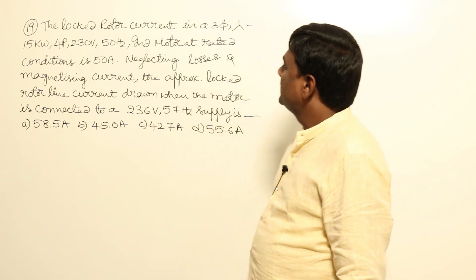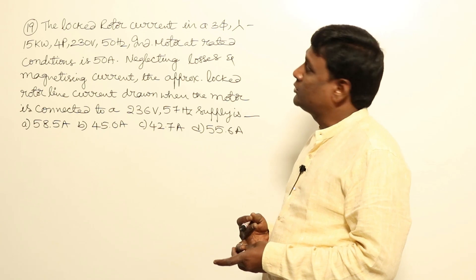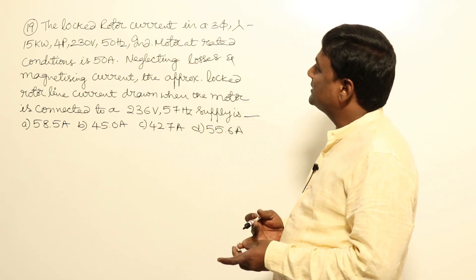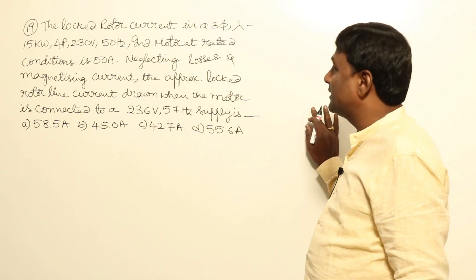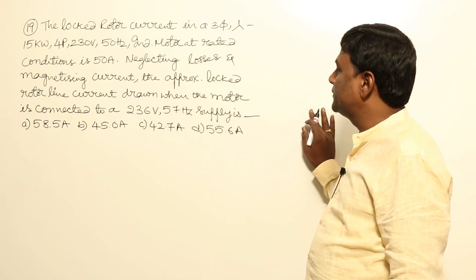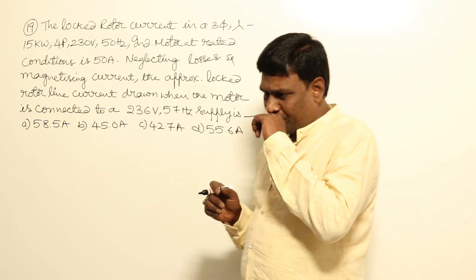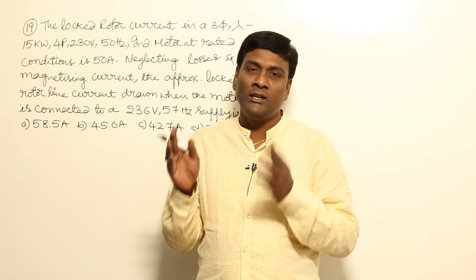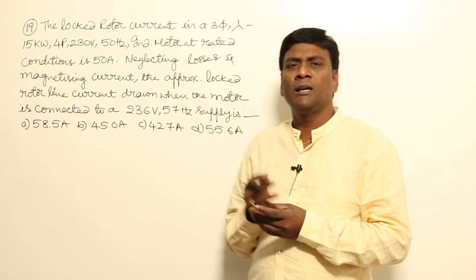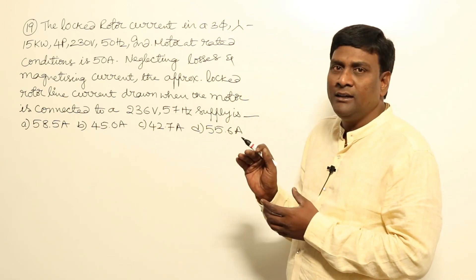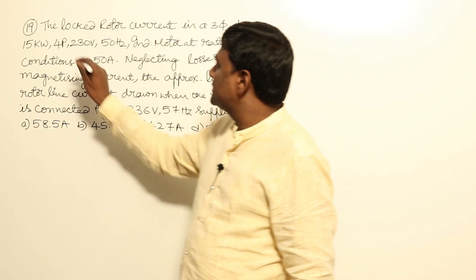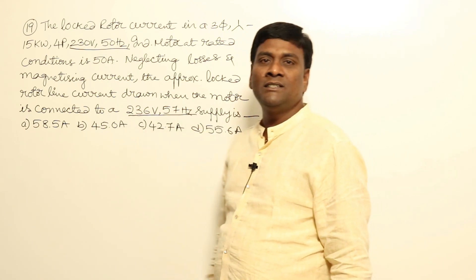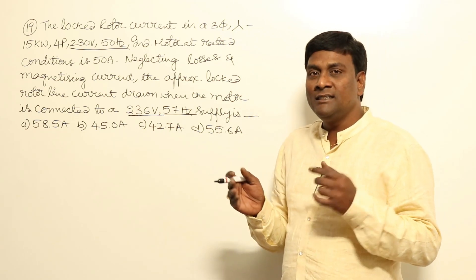Third problem: the locked rotor current of a three-phase, star-connected, 15 kW, four-pole, 230 V, 50 Hz induction motor at rated conditions is 50 amperes. Neglecting losses and magnetizing current, find the approximate locked rotor line current when the motor is connected to a 236 V, 57 Hz supply. This is like the SC test in a transformer, which can be conducted at any non-zero voltage and frequency.